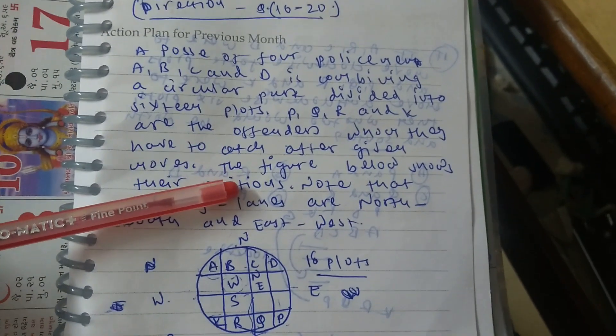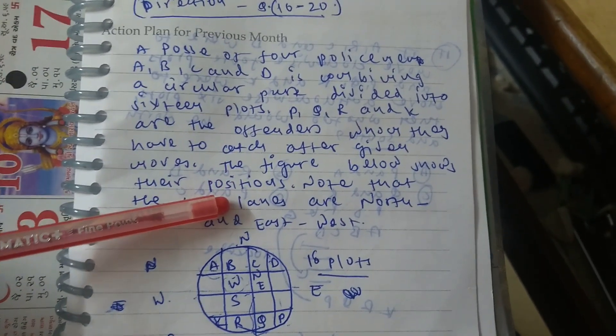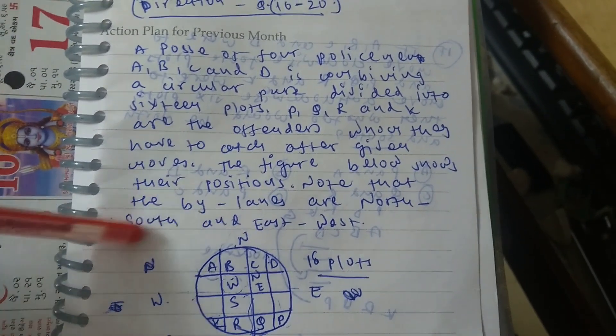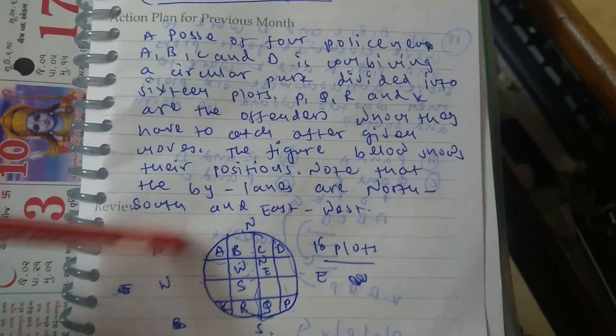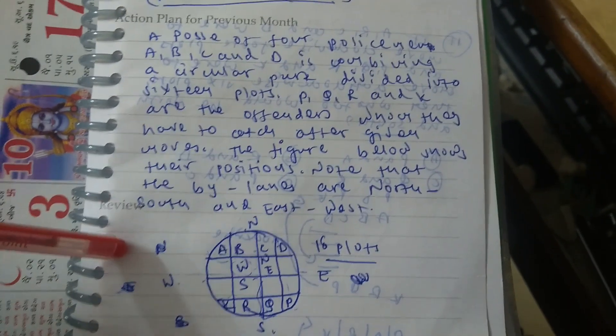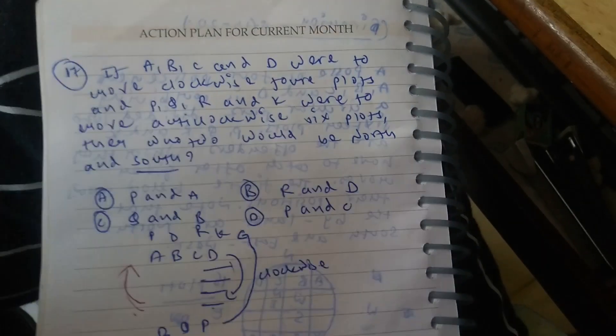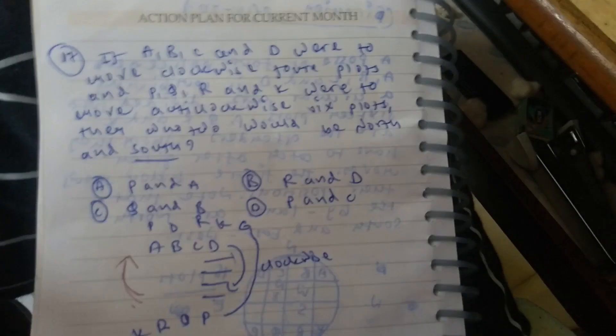After given moves in the figure that is given below, their positions are noted down by lanes in different directions that is divided into north, south, east, and west. If A, B, C and D were moved clockwise direction, four plots,